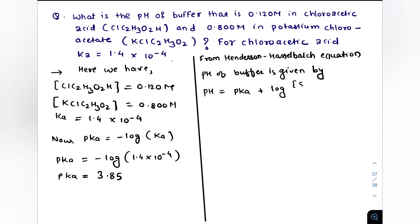And for this question we will have pH equals pKa which we have calculated as 3.85 plus log of salt. Here it is chloroacetic acid, sorry it is not chloroacetic acid, the salt here is potassium chloroacetate.